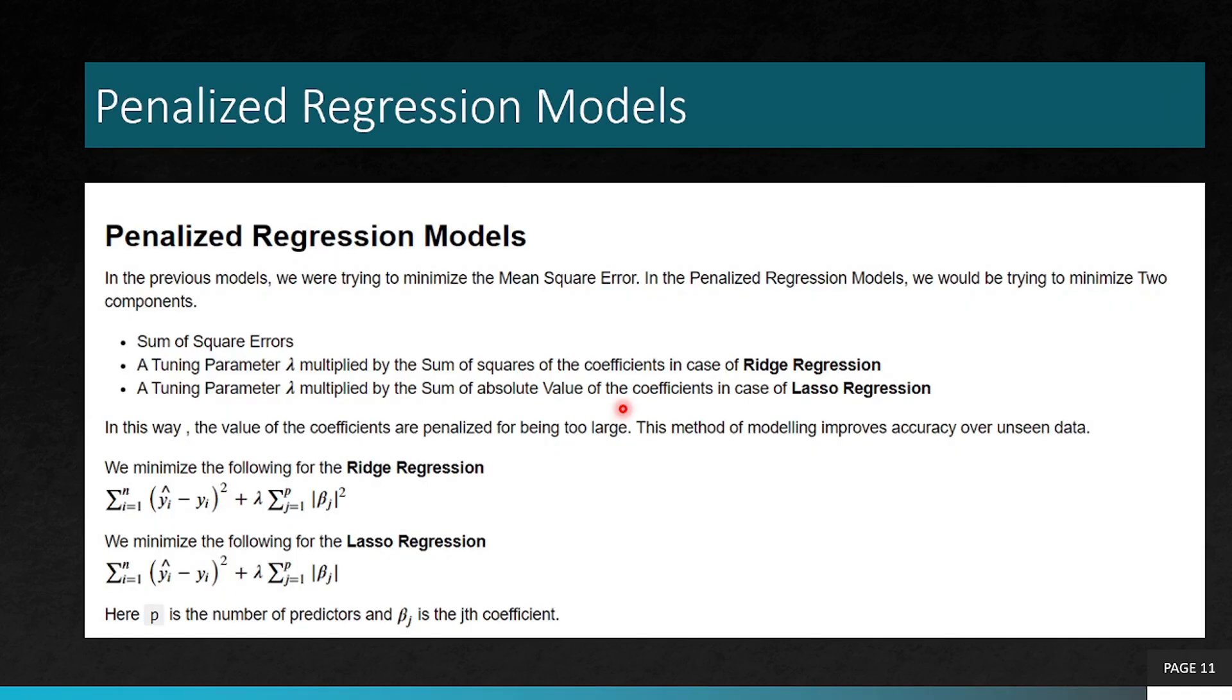We now introduce another regression model. Here it is called a penalized regression model. Penalized regression model utilizes two components: the sum of square errors and it has a tuning parameter lambda which is multiplied by the sum of squares of coefficients in case of ridge regression.